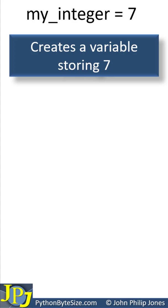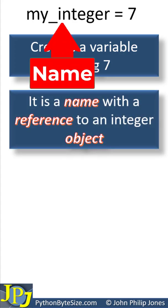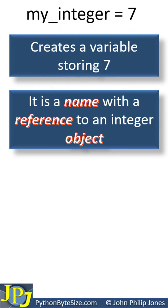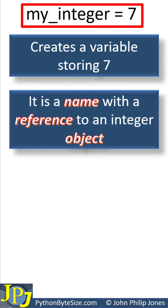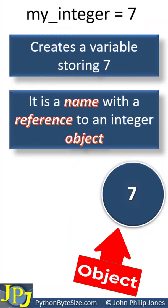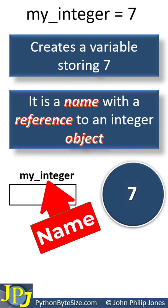But we need to think of this in a different way as a Python programmer. What we've got is a name with a reference to an integer object. Whenever you see an assignment statement like this, you need to get a handle on this idea of a name holding a reference to the object. This is the object with the value of 7, and this is the name.